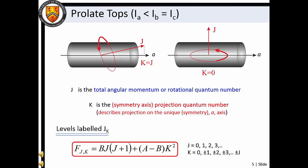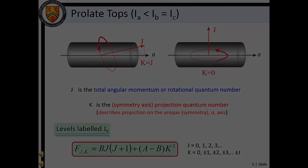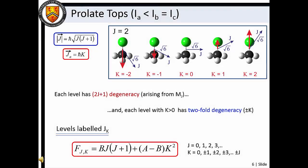Since two quantum numbers are required to describe the rotational motion of a symmetric top, rotational energy levels are labeled with the J value and a subscript K value. We also find that the J and K quantum numbers arise in the energy level expression for symmetric tops. J can take any positive value or zero. K, on the other hand, must take values that are integer steps in the range from J to negative J. Each level has a 2J+1 degeneracy under field-free conditions arising from the M_J spatial projections. We also find that each level with K greater than zero has a two-fold degeneracy.